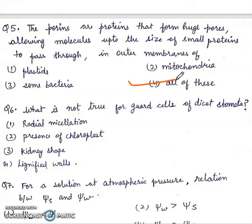Question 6: Which is not true for guard cells of dicot stomata? First, radial miscellation, second, presence of chloroplast, third, kidney shaped, fourth, lignified walls. Answer is fourth, lignified walls.